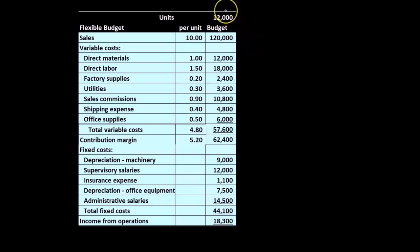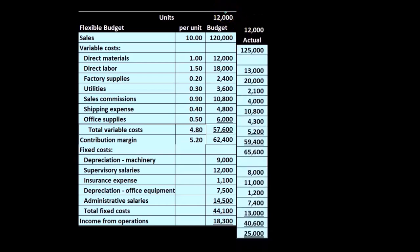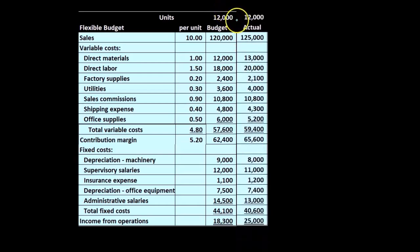Here are our budget numbers at 12,000. If we compare that to the actual numbers, we took our actual numbers and broke them out into a contribution margin type of income statement.